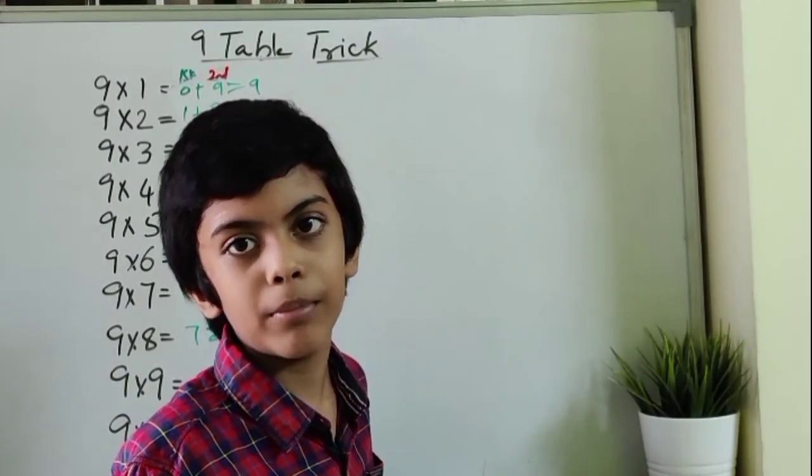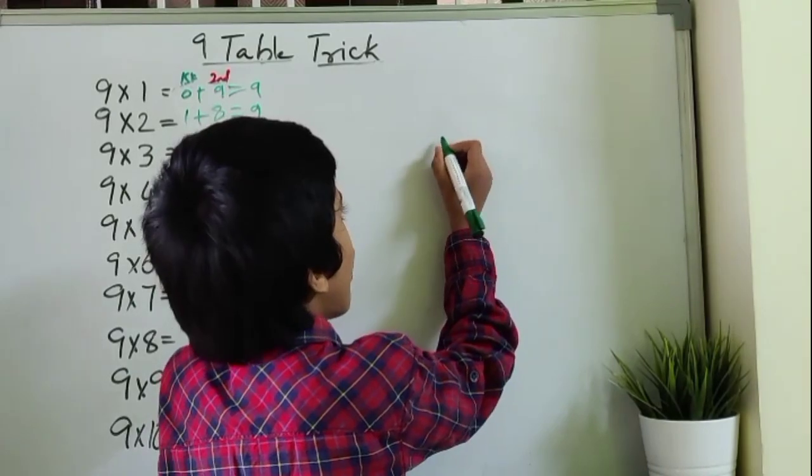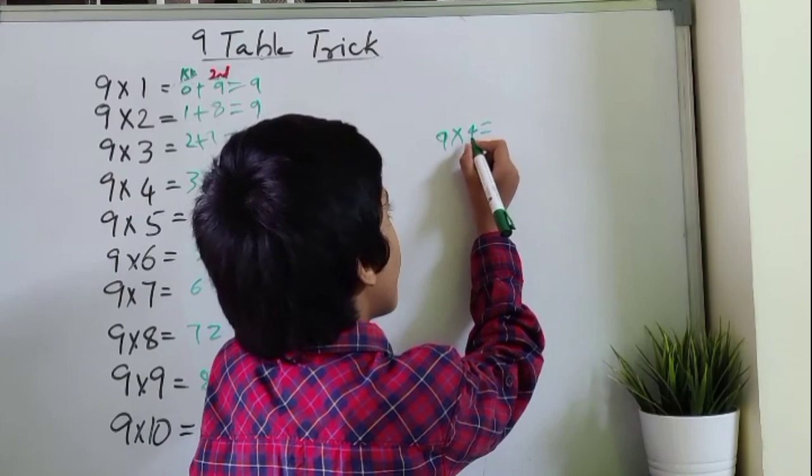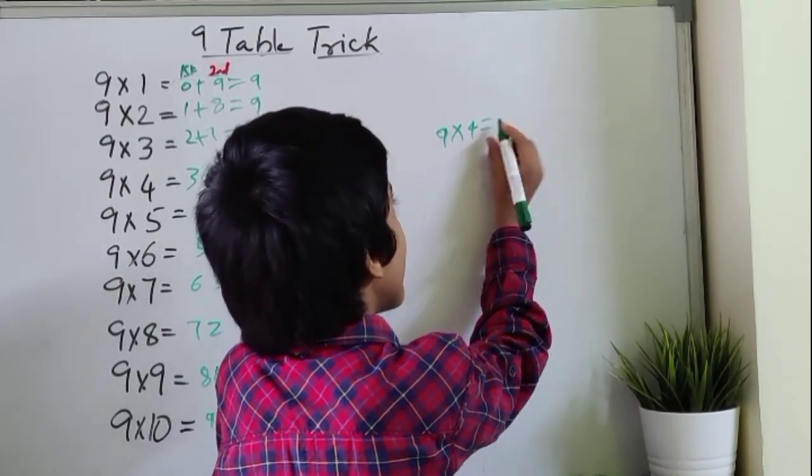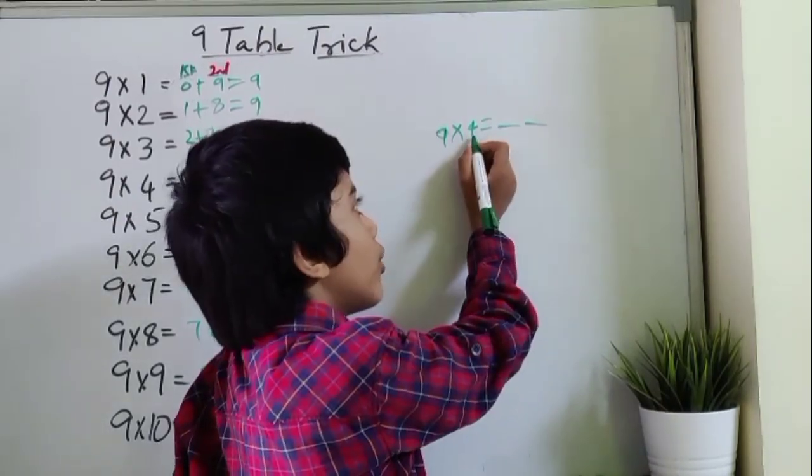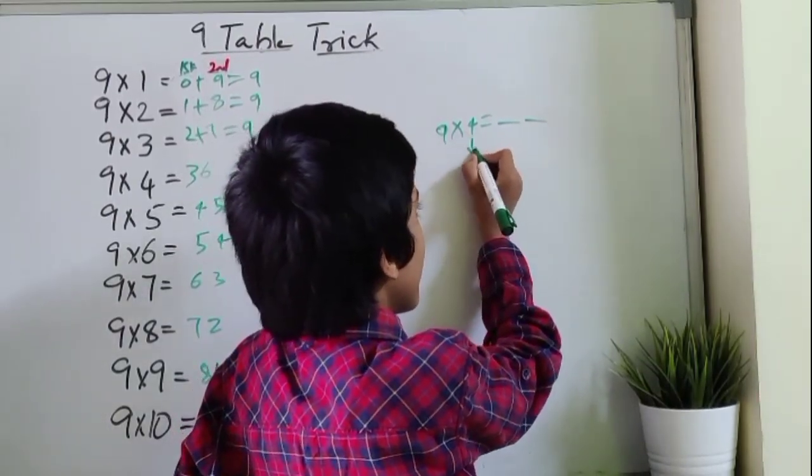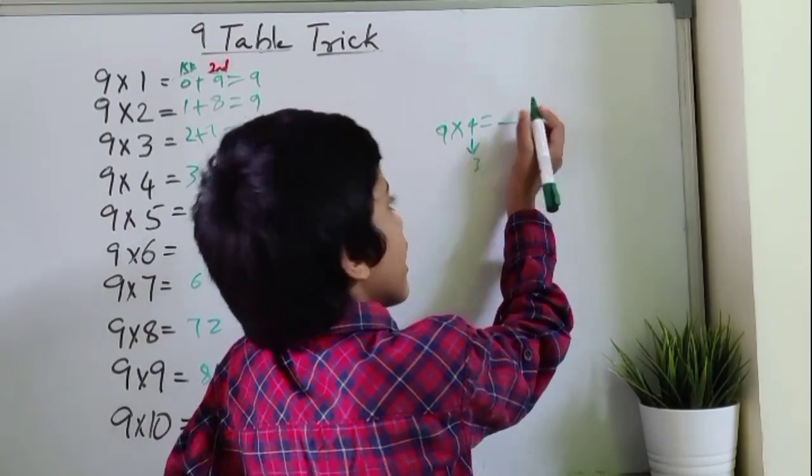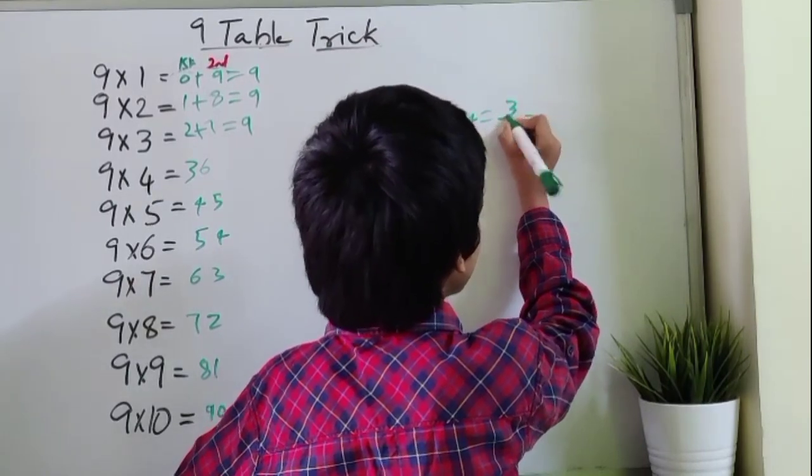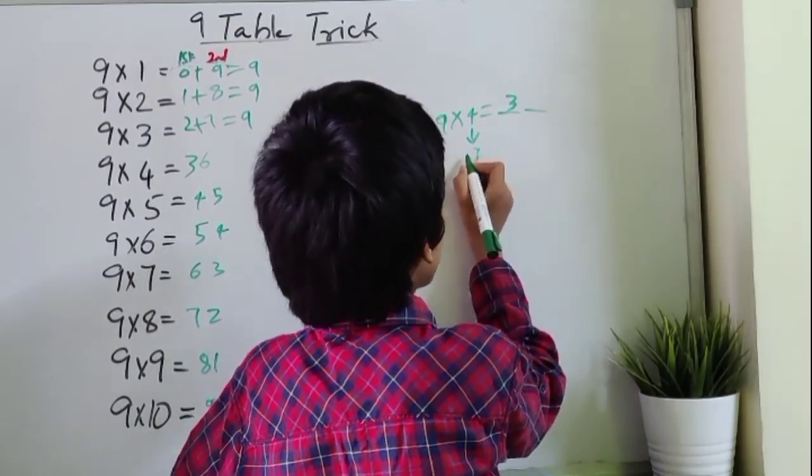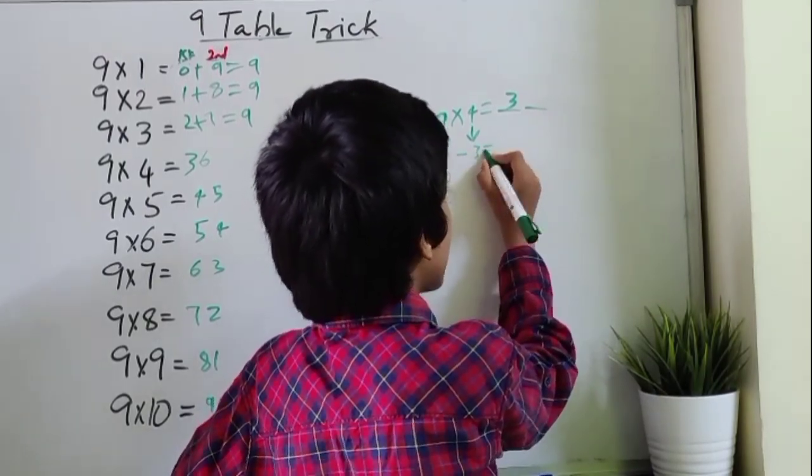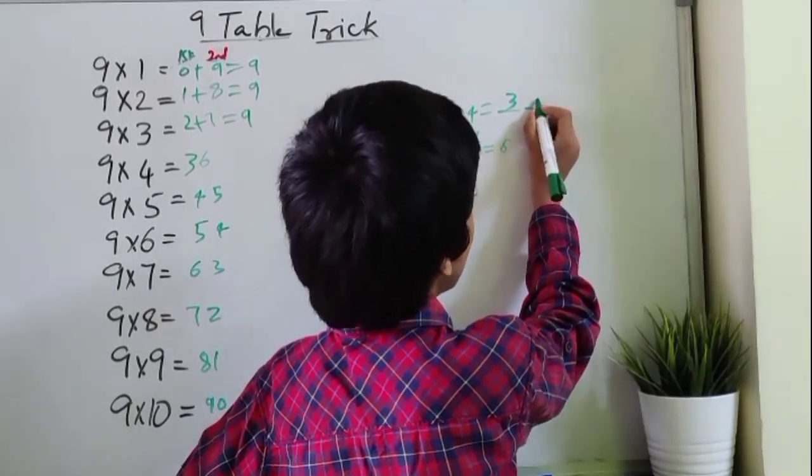Now let us see the quickest trick to learn the 9 table. If you want to multiply 9 into 4, to get the first digit you have to find the number before 4, which is 3. So the first digit is 3. To find the second digit, subtract 3 from 9. So the answer is 6. So 4 times 9 equals 36.